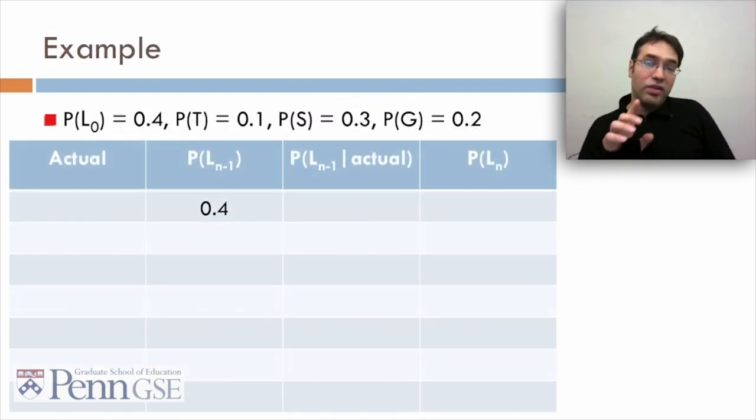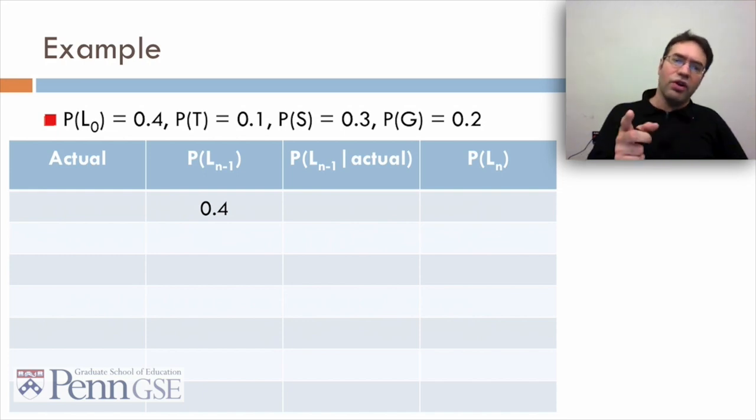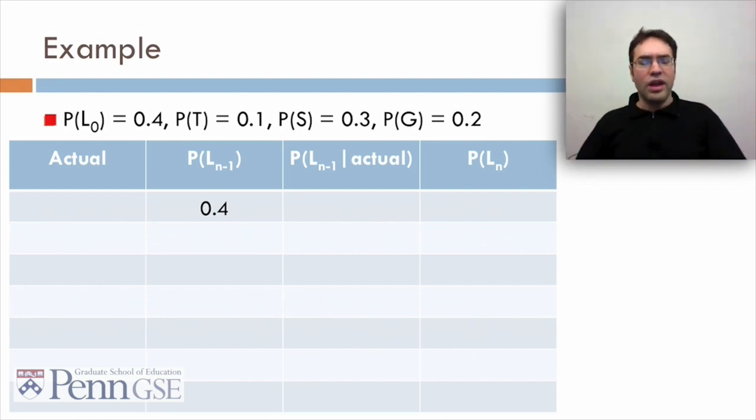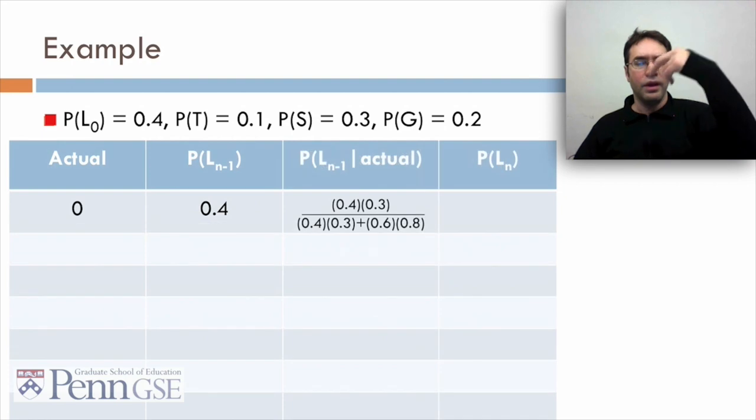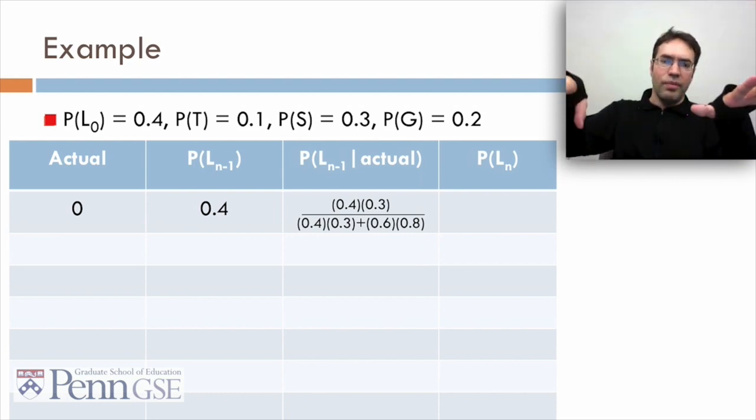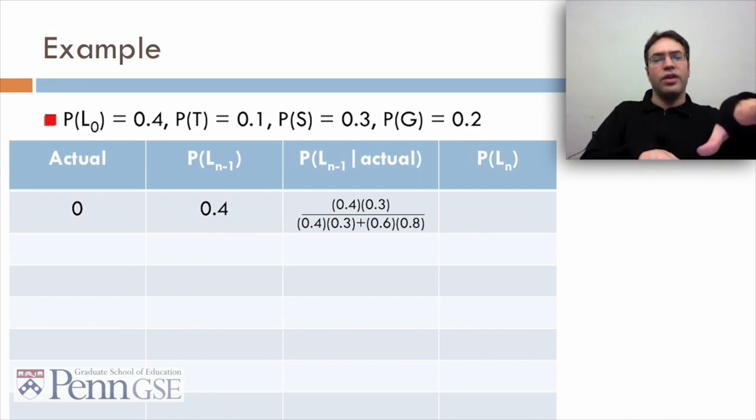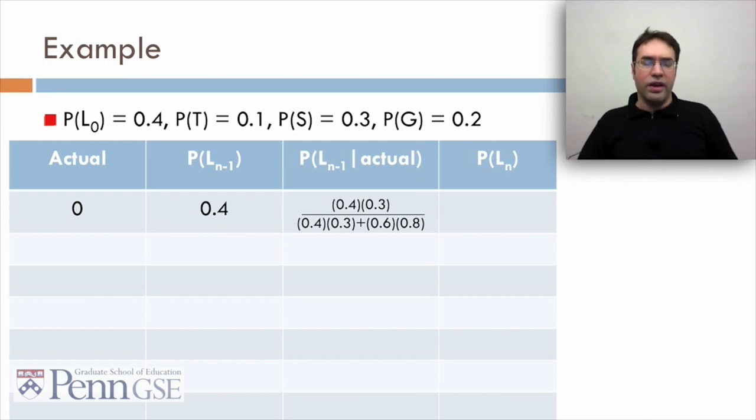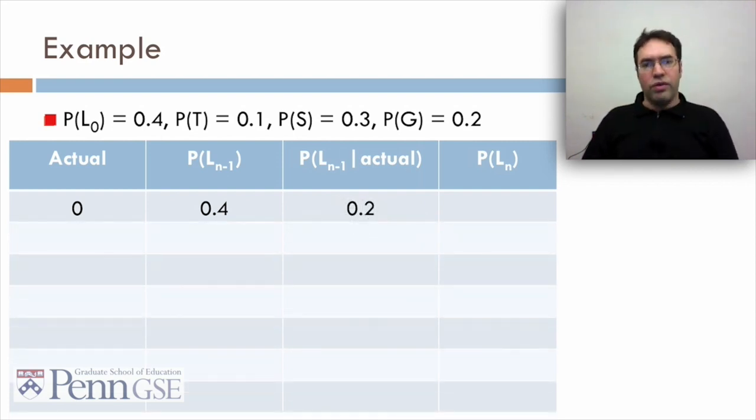Let's look at an example a little more in depth. Let's say the probability they knew it beforehand is 0.4, the probability they learn it if they don't know it is 0.1, the probability of slip is 0.3, and the probability of guess is 0.2. In that case, the initial probability they know it before they do anything in the system is 0.4. P(L0) becomes P(Ln-1). Let's say they get it wrong. In that case, the probability they knew it beforehand is the probability they knew it beforehand without this information times the probability of slip, because they got it wrong, over that probability plus the probability that they didn't know it times the probability that they didn't guess it. So 0.6 times 0.8. The inverse of 0.4 is 0.6, the inverse of 0.2 is 0.8. So when we compute that out, we get 0.2. So before we knew they got it wrong, we thought they had a 40% chance of knowing it. But after they get it wrong, we have a 20% chance that they knew it. They still might have slipped. Then the probability that they know it afterwards is the probability that they know it plus the probability that they didn't know it times the probability they learned it, and that is 0.28.